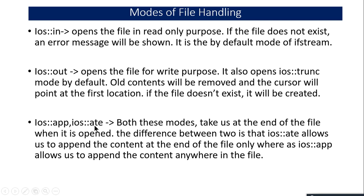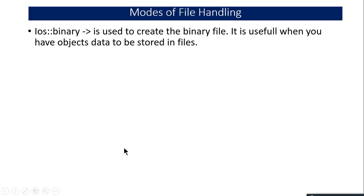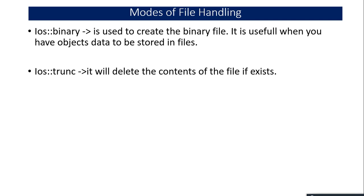app and ate are almost the same — both are append modes — but the major difference is that app allows you to add content anywhere in the file, while ate only allows you to add content at the end of the file. Binary mode is rarely used but is needed when you want to create a binary file; it is generally used when your program contains objects and you want to store their data.